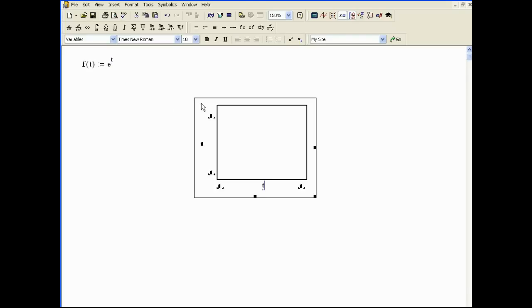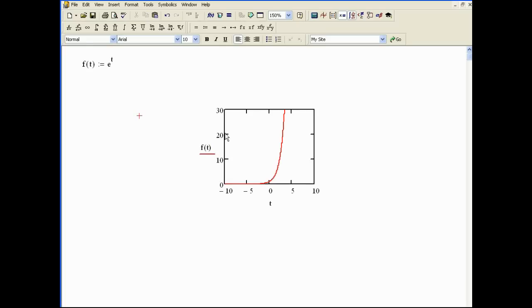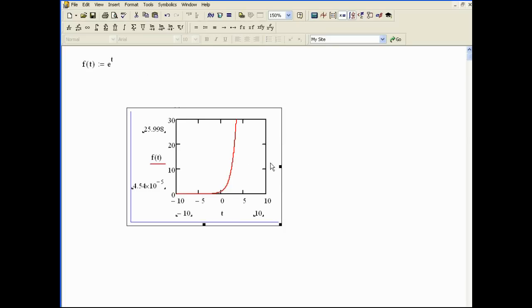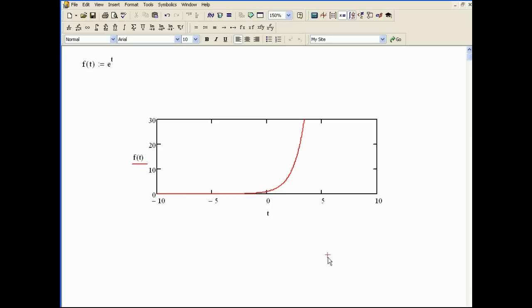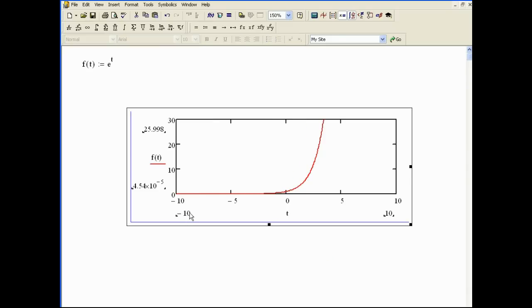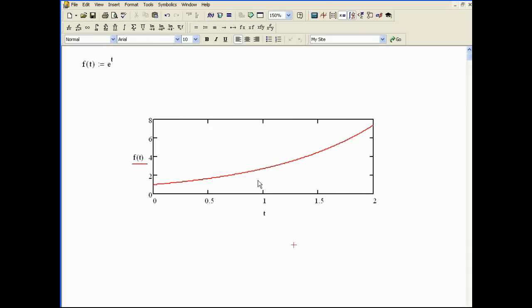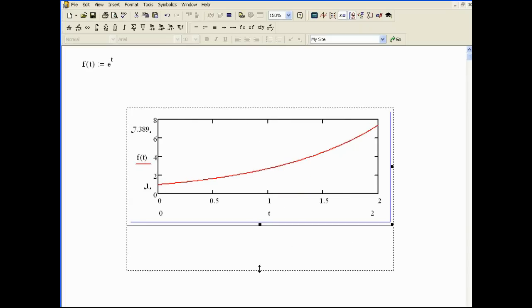So let's start by plotting a really simple function here, e to the t. We've all seen that before. Well, this is an awfully big range. MathCAD assumes minus 10 to 10 on the x-axis, the horizontal axis, if you don't tell it otherwise. Let's use 0 to 2 so we can zoom in a little bit. So there's what it looks like. Looks about right.